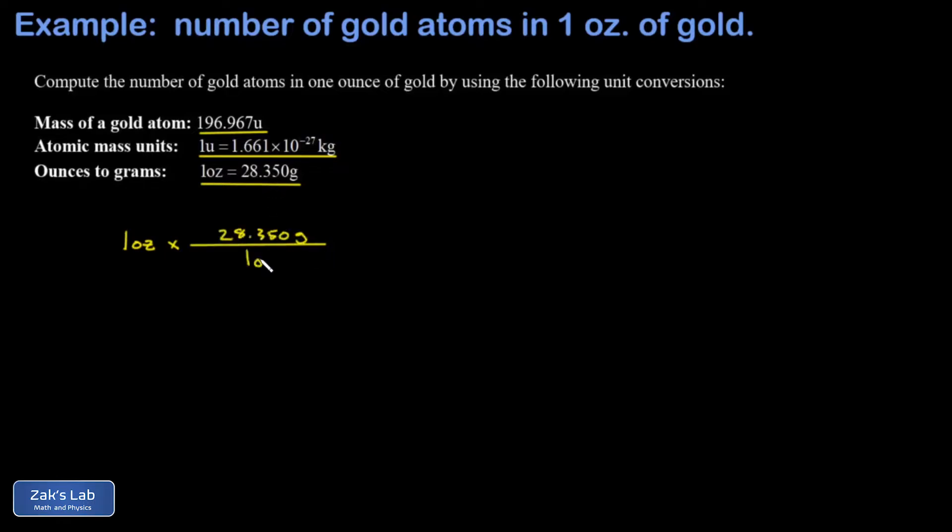First I'm going to convert the ounces to grams. There's 28.350 grams in one ounce and the ounces cancel out. Then it looks like I need to get kilograms instead of grams, so that's a factor of a thousand. There's 1000 grams